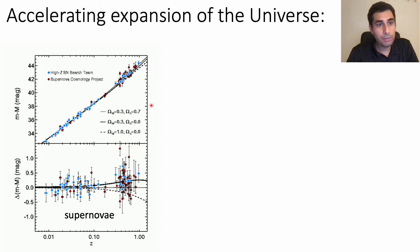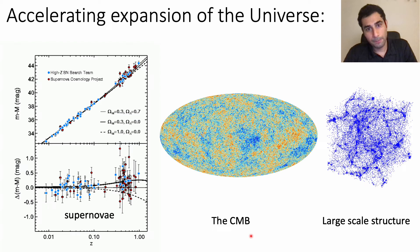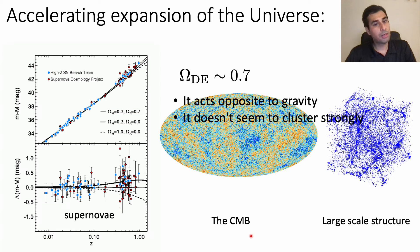And not only by supernovae observations but later through the CMB and large structure data analysis we confirmed this phase in the universe. And what we know about the cosmic acceleration is that it has to account for around 70% of the universe energy density budget.